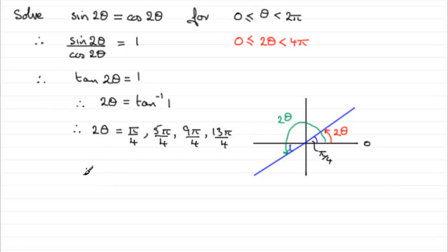Now, we divide by 2, and we get pi by 8, and 5 pi by 8, 9 pi by 8, and finally 13 pi by 8. And they're all in radians, so I'll just put radians there, or rads for short.